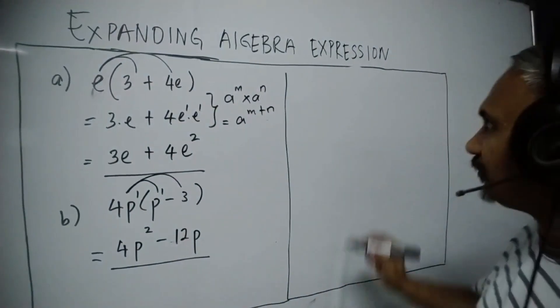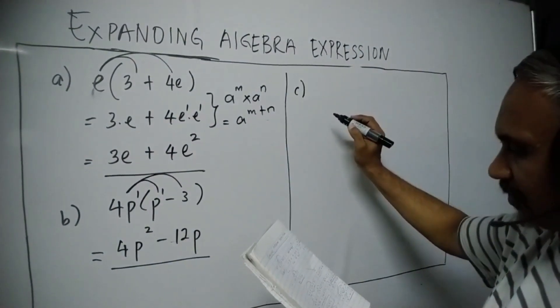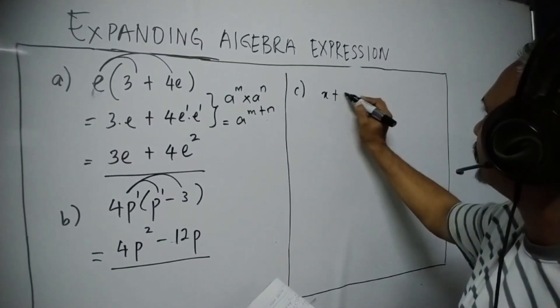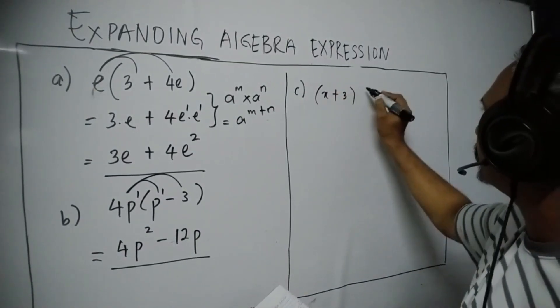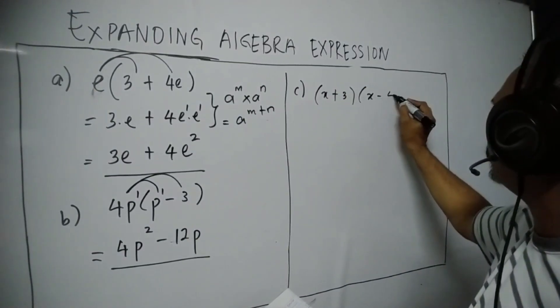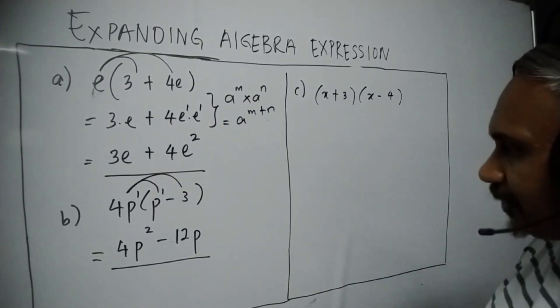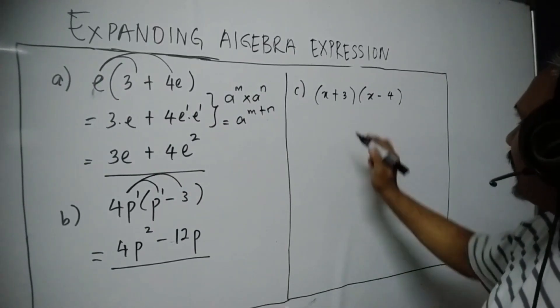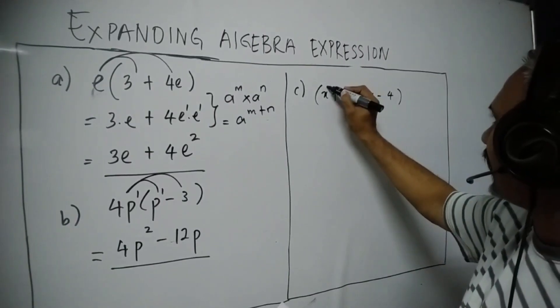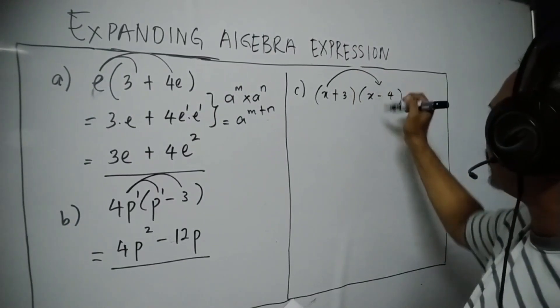For the third question we have here X plus 3 and X minus 4. So what we can do here is now, we can expand the first X with the whole term at the back.